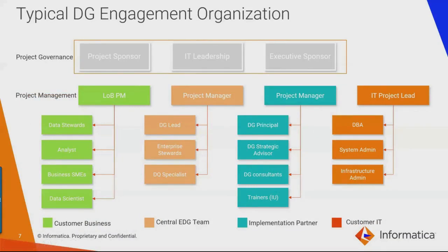Let's look at a typical data governance engagement organization. At the top of the chain, you have people like executive sponsors, program sponsors, and IT leaders providing overall leadership and guidance. Under that, the key players starting from the left are the line of business participants — line of business data stewards, analysts, SMEs, and consumers. Then we have the core data governance office, which is the central entity providing guidance on implementation and rollout. Then we have the implementation partners who provide expertise and advisory services, and lastly the technology partners who provide application support and system expertise.